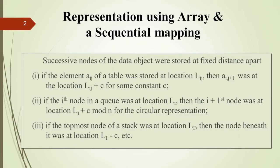This video covers the representation of simple data structures using arrays and sequential mapping. In this representation, successive nodes of the data object are stored at a fixed distance apart. For example, the first data object is at the 5th location, followed by objects 7, 9, and 11. The fixed distance depends upon the type of the data object.